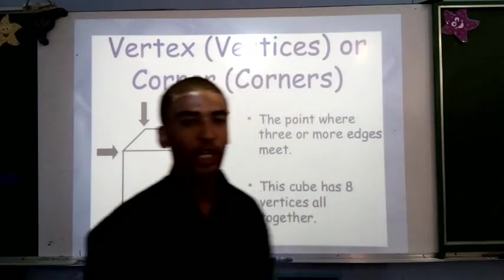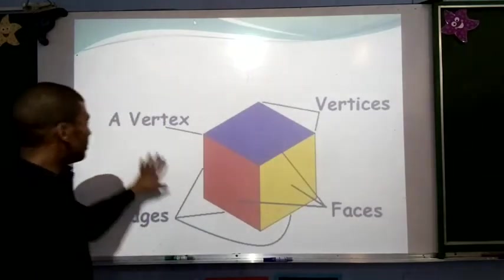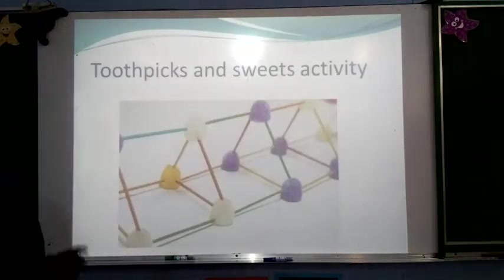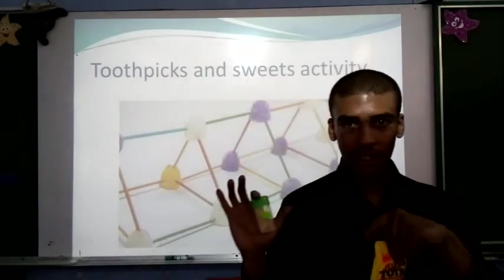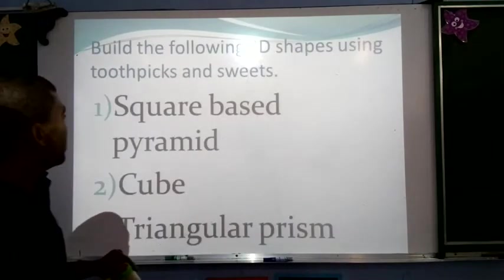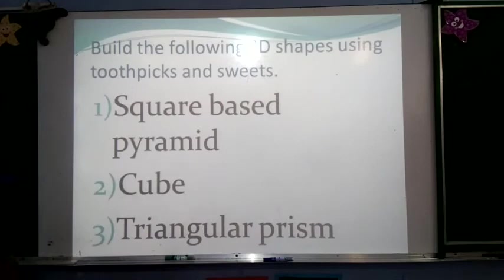Now, at this point, what you're going to need are some toothpicks and some jelly tots. And with your toothpicks and your jelly tots, I would like you to build the following three shapes. That's a square based pyramid, a cube, and a triangular prism.